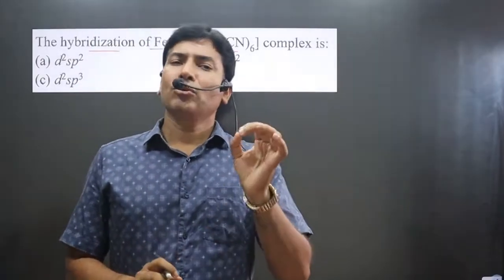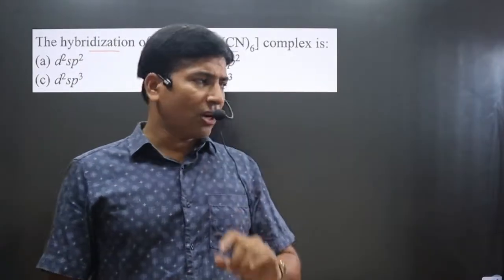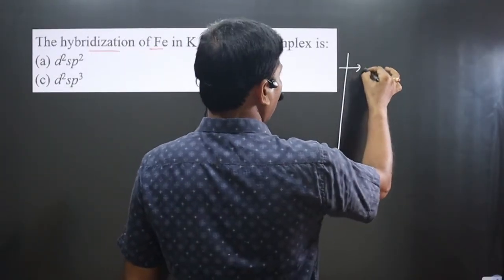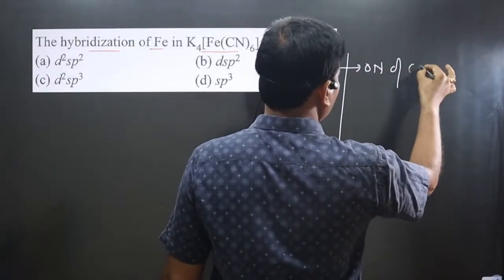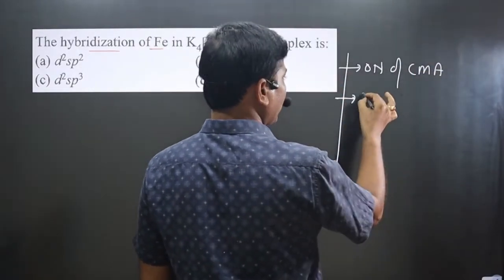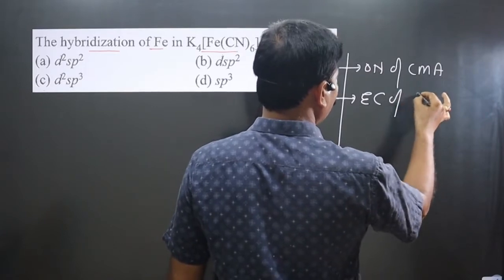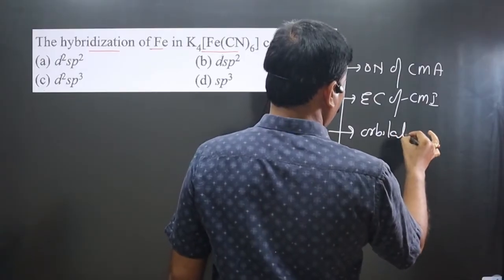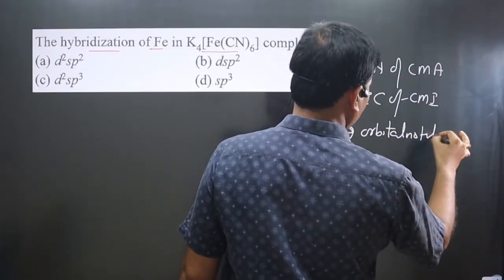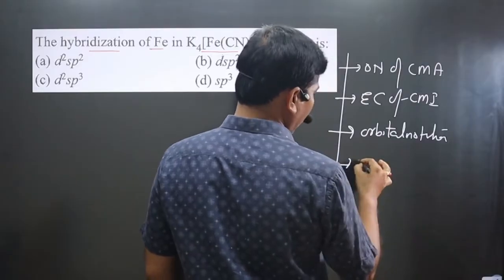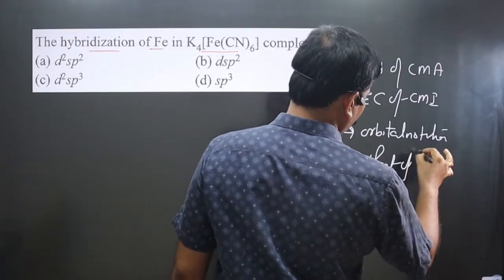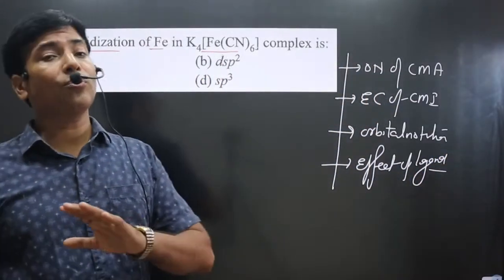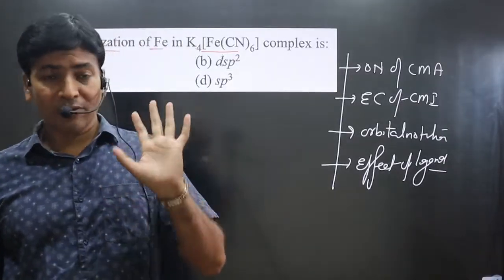Valence bond theory is easy to use. To apply it, we follow these steps. First, write the oxidation number of the central metal atom. Next, write the electronic configuration of the central metal ion. Then write the orbital notation for the central metal ion. Finally, consider the effect of the ligand — whether it is a weak field or strong field ligand. Weak field ligand: no pairing of electrons. Strong field ligand: pairing of electrons.